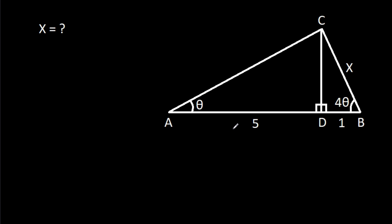In this video, we have been given that AD is 5, BD is 1, angle CAD is theta, angle CBD is 4 theta, and BC is x. We have to find x.